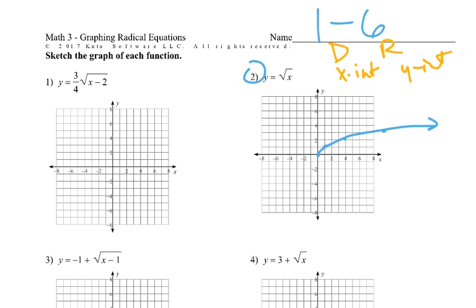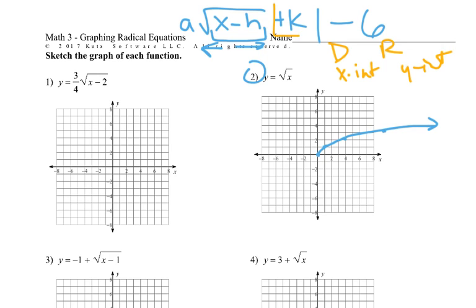So that's the basic function of the square root. Using that transformational knowledge: if there's something on the inside, it's going to move it right or left. If there's something added or subtracted on the outside, it moves up or down. And out front, it's going to do a vertical or horizontal stretch, and a reflection if it's negative.